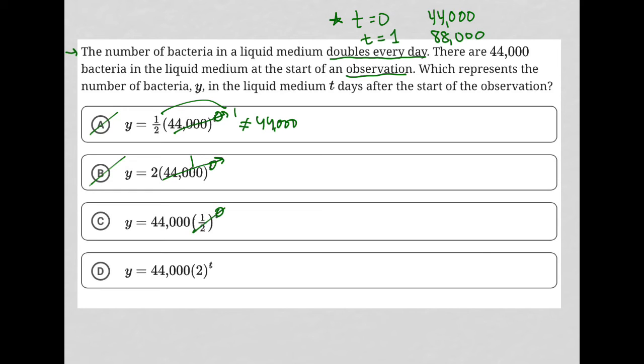If T were to equal zero here, one half to the zero, that's one. 44,000 times one, so that does equal 44,000. So that's good. Let's see if there's any others. And then this would also, right, if T were zero, that would be one. And this would also equal 44,000.